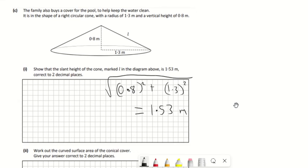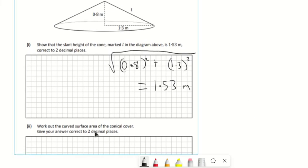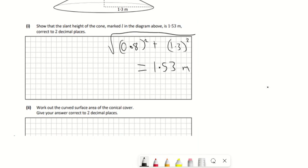Work out the curved surface area of the conical cover. The formula for curved surface area of a cone is π r l, so l is always the slant. The slant part is the l. We know the slant now, it's 1.53. So it's π times the radius—the radius of the cone up there is 1.3—and the slant is 1.53. So that's all we need to do, we get 6.25 meters squared because it's area.